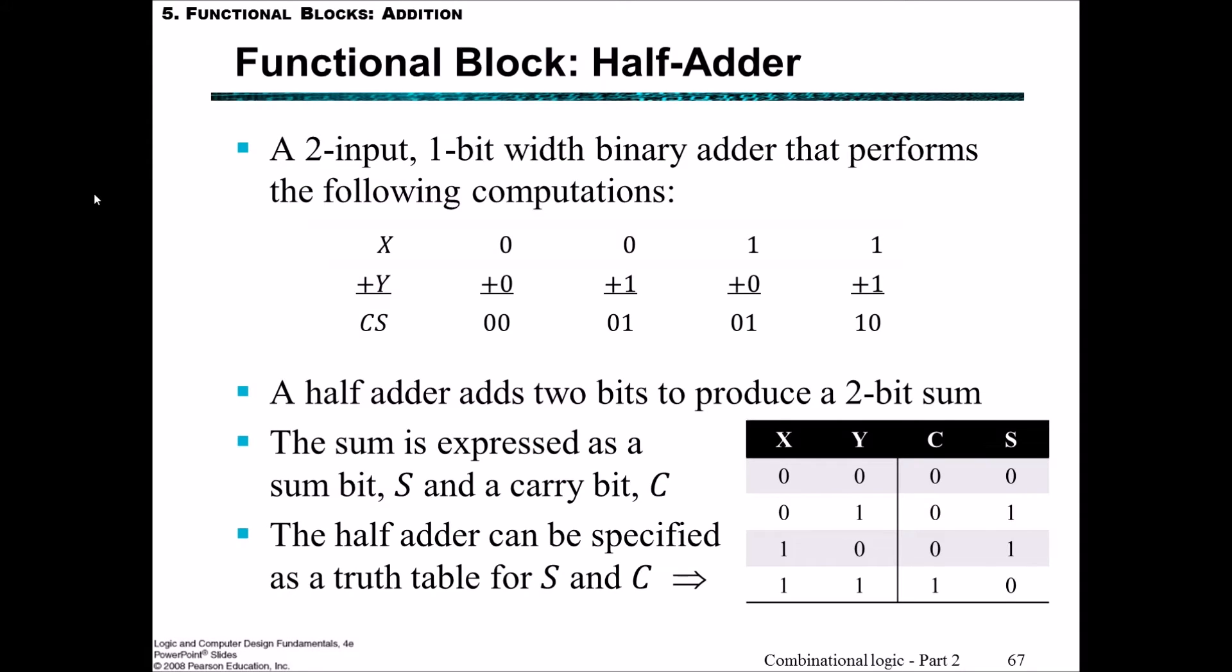First, let's look at the half-adder block. In this case, we have two inputs, x and y, and we will have a carry and a sum as the output. It does one-bit width binary addition and performs the following computations: one and one gives a sum of zero and a carry of one.